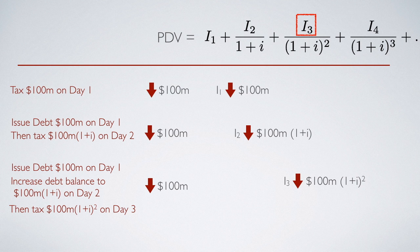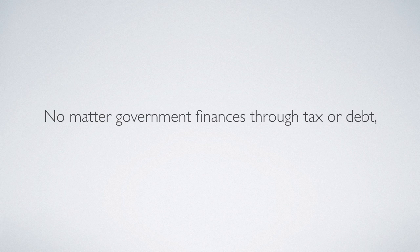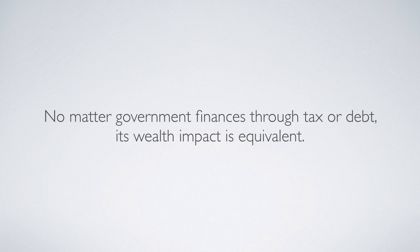As we can see, whenever government decides to spend money, no matter whether government finances through tax or through debt today, it does not change its impact on the household's lifetime wealth level. It would always be the same. That is what Ricardian equivalence theory teaches us. It basically says that no matter whether government finances through tax or debt, its wealth impact is equivalent.